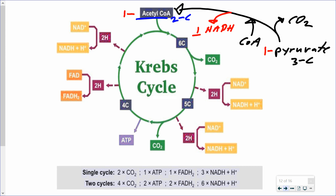There is a four-carbon compound in the Krebs cycle that joins together with the two-carbon acetyl-CoA to form a six-carbon compound. Through the cycle, we eventually get back to that same four-carbon compound. Going from a six-carbon to a four-carbon compound, two carbons are kicked out as carbon dioxide — again, that's waste and not the primary focus. The primary focus is the energy conversions: taking the energy from acetyl-CoA and converting it into other energy forms.